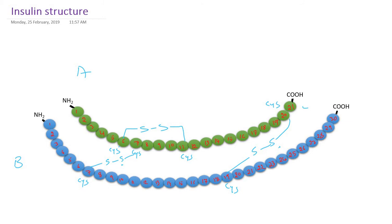This is the structure of insulin. The first amino acid of the A chain is glycine and the last amino acid of the A chain is asparagine. The first amino acid of the B chain is phenylalanine and the last amino acid is threonine. Whether you take insulin from bovine, pig, horse, or sheep, the majority of the amino acid sequence is the same — insulin is a hormone with very little species variation. In pig and bovine insulin, the 30th amino acid of the B chain is alanine instead of threonine.